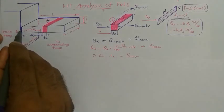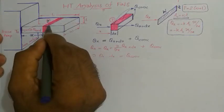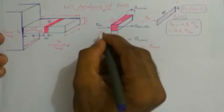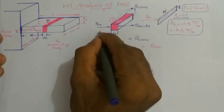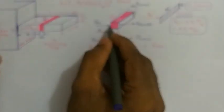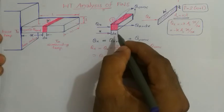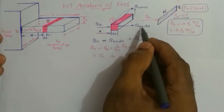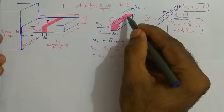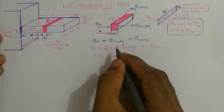In this heat transfer analysis, heat flows from the base surface through the fin by conduction, and from the fin to the surroundings by convection. The same element is extracted at distance x from the base surface. At distance x, the amount of heat conducted towards the element is qx, and after thickness dx — that is at x plus dx — the heat conducted away is qx-plus-dx. Some heat is also being convected through the lateral surface (shown in red) to the surroundings.